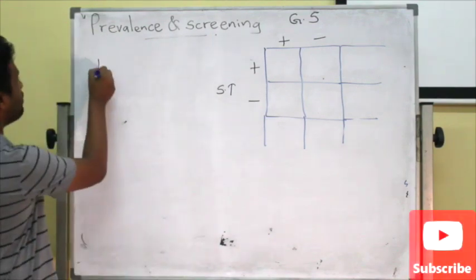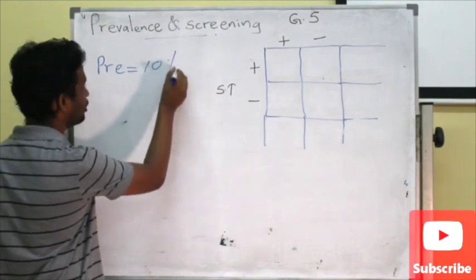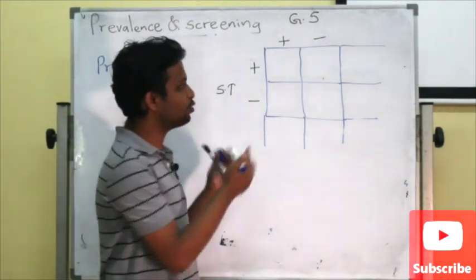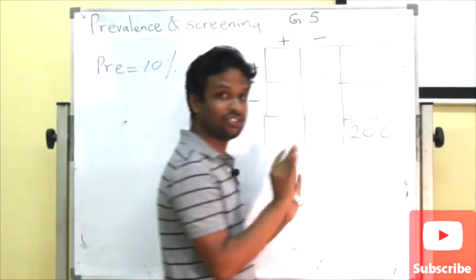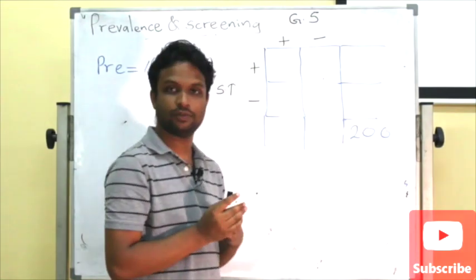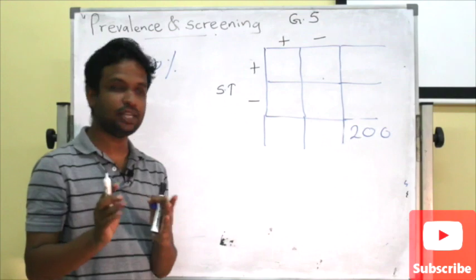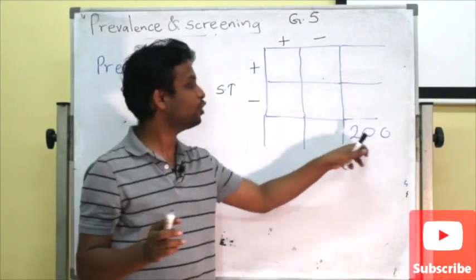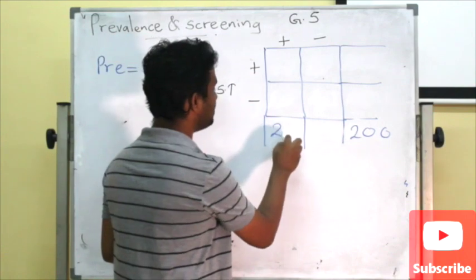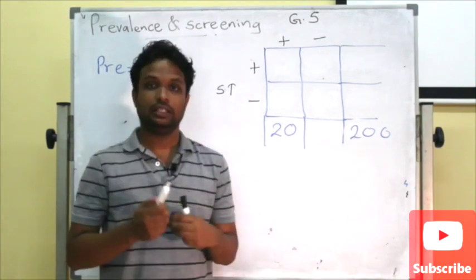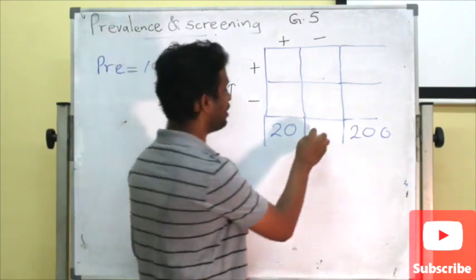So if the prevalence is 10%, now we can fill this two-by-two table. We know that the total population is 200 — there is no change in the total population. Now the prevalence is 10%, that means 10% out of 200, which is 20. So the total number of diseased people must be 20, and the total number of non-diseased or healthy people must be 180.